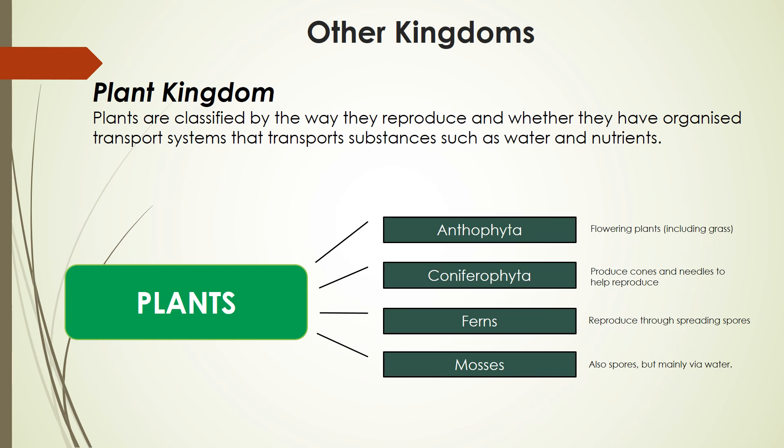We've been looking at how we classify animals in the animal kingdom, considering features including the type of skin, skeletal structure, how they breathe, and how they reproduce. Now you might be wondering how we classify things in other kingdoms. In the plant kingdom, like with animals, we look for key observable characteristics. Main ways to separate plants into groups are how they reproduce and whether they have organized internal transport systems. The four main phyla of the plant kingdom differ in how they reproduce: Anthophyta reproduce via flowers, Coniferophyta through cones and needles, ferns through spreading spores, and mosses also produce spores but mainly spread through water.